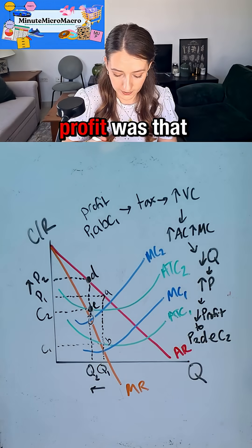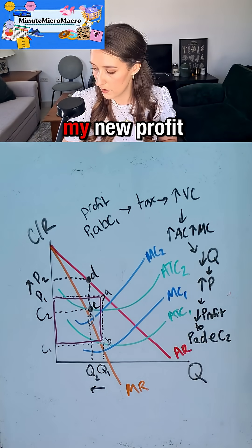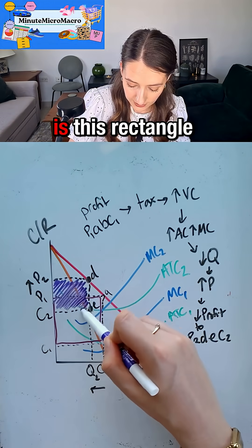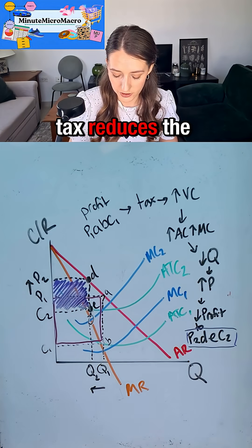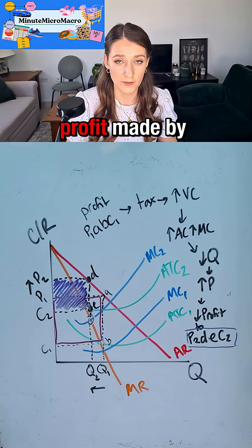So my original profit was that rectangle. My new profit is this rectangle. So applying the tax reduces the quantity, increases the price, and reduces the profit made by the firm.